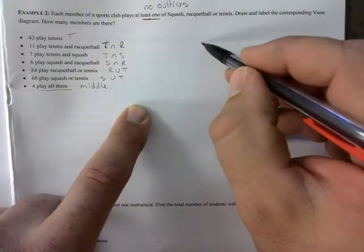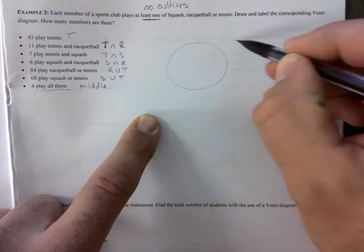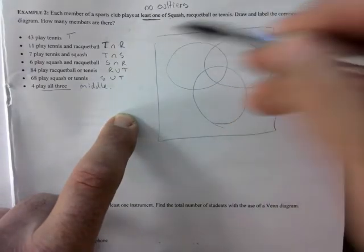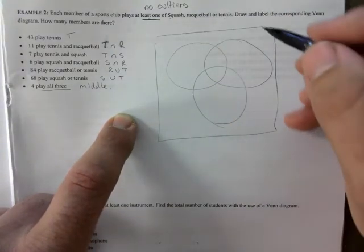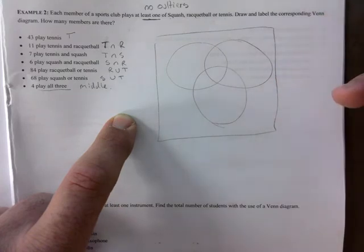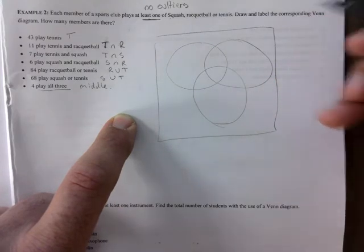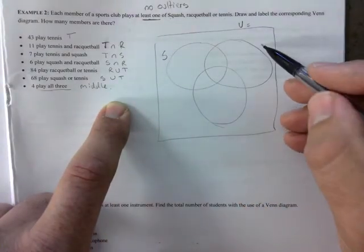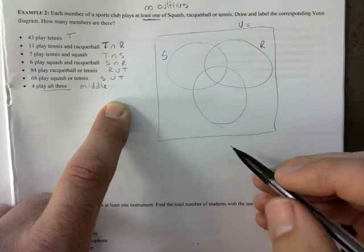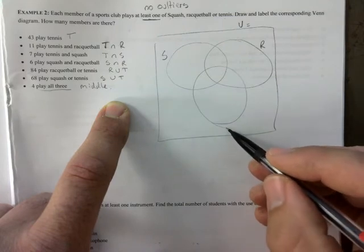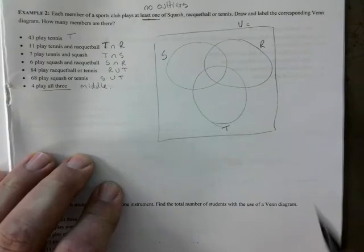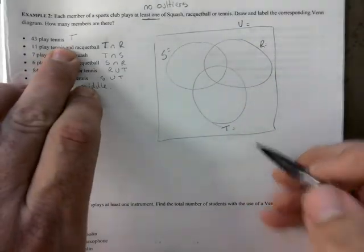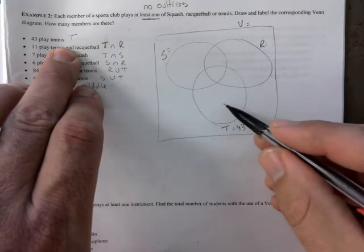So I'm going to quickly draw my Venn diagram here. And I have my universal around it. I don't know the universal just yet, but I'm going to put that there. And so I have squash, racquetball and tennis. In no particular order. I don't care which order you do this. So 43 for tennis. Let's put that down. That goes right here. Not inside.